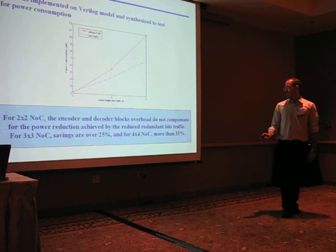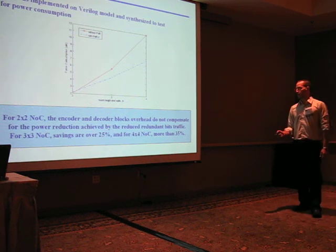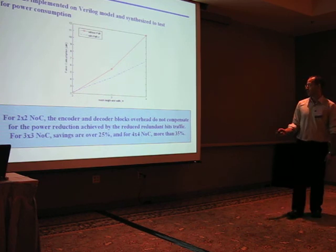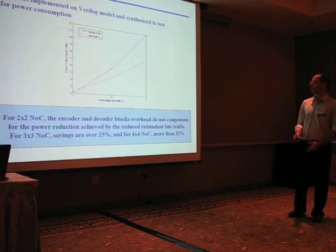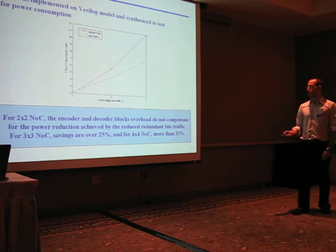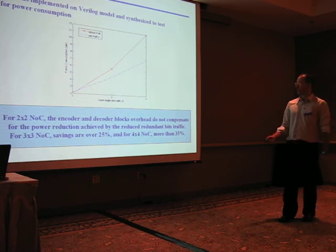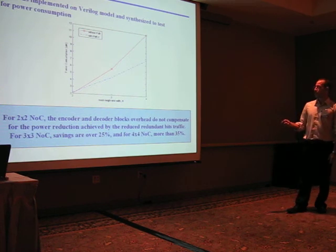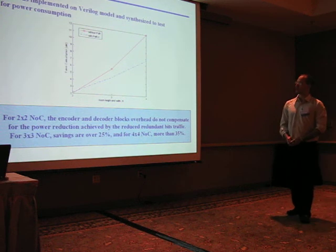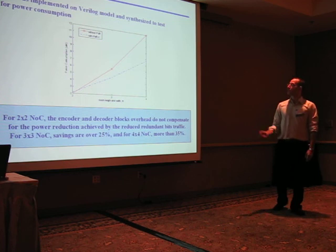For two by two network on chip, the encoder and decoder blocks overhead do not compensate for the power reduction achieved by the reduced redundant bits traffic. However, for three by three NOC, the savings are more than 25%, and for four by four, savings are more than 35%. Therefore, we reduce the power consumption in some NOC designs.